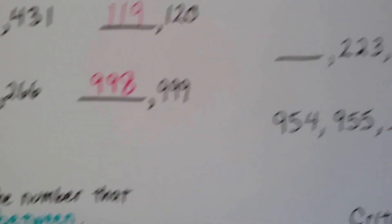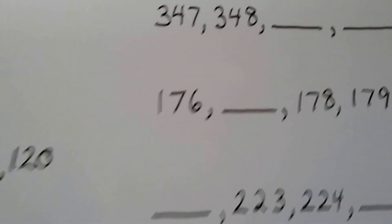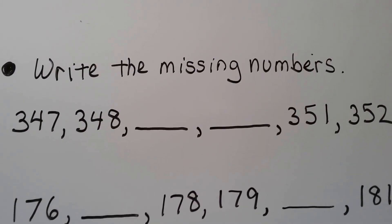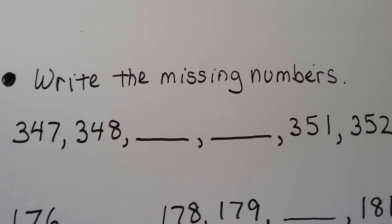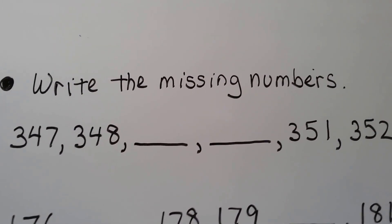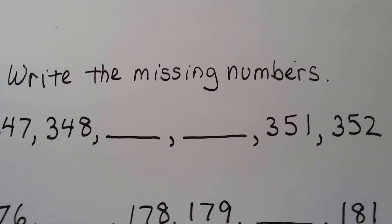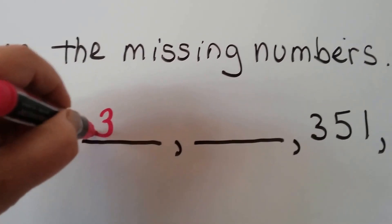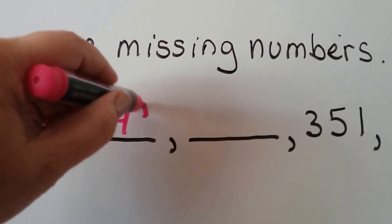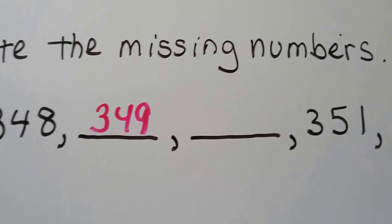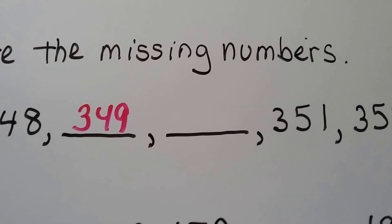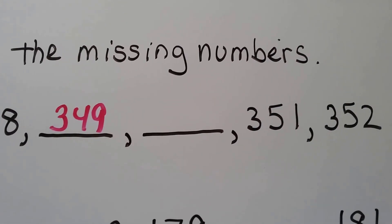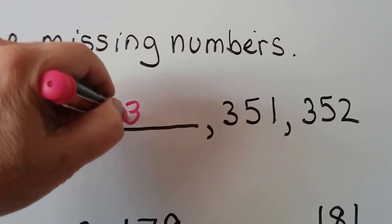Let's see if we can write the missing numbers for these. We have 347, 348 — do you know what comes next? 349. Then what would come next? If you said 350, you're right.